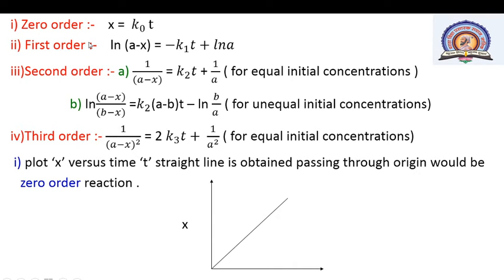For first order reactions, the integrated rate equation is k₁ = (1/t) ln(a / (a−x)). This can be rewritten as ln(a−x) = −k₁·t + ln(a), which is similar to y = mx + c. With the help of this equation we plot the graph, find the slope, and determine the rate constant.